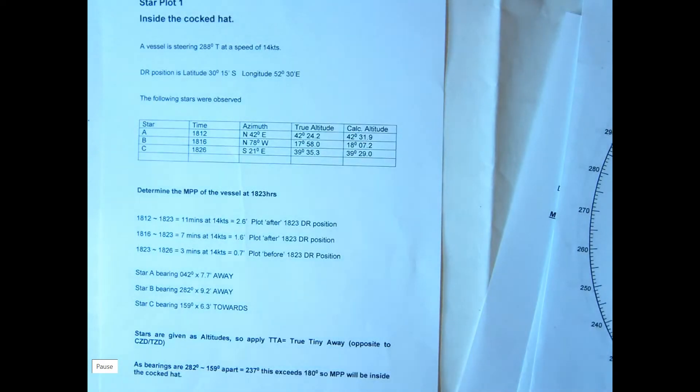We'll have a look at the star plot that occurs inside the cocked hat. Vessel's steering 288 at 14 knots, D-position 1823. We observe stars A, B and C. The first two before 1823 and the third one after.